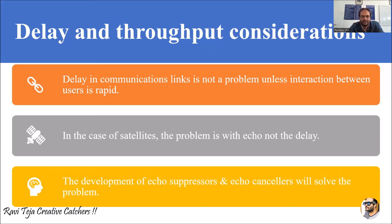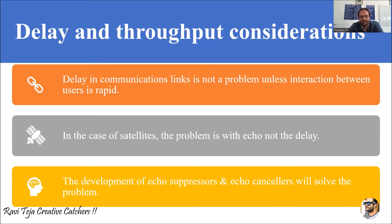So whenever there is a problem with echoes, delay obviously happens and there will be a problem with the satellite communication system. In order to avoid these interferences, we need to remove these echoes. Engineers have come up with solutions called echo suppressors and echo cancellers — these are large subsystems located at the satellites as well as the earth stations.